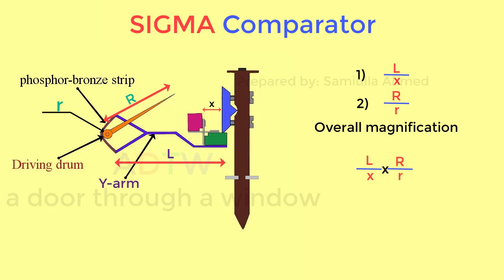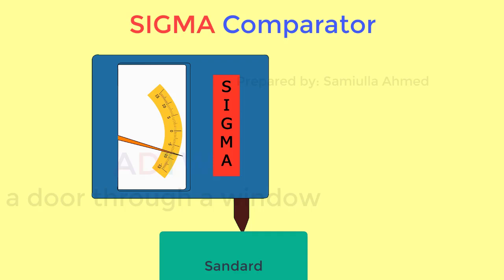Since we understood the construction, now we will see how it is used to compare or its working. The instrument is initially calibrated to the standard and the zero is set to this value.